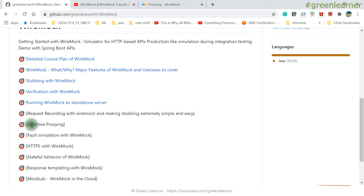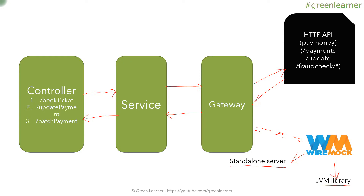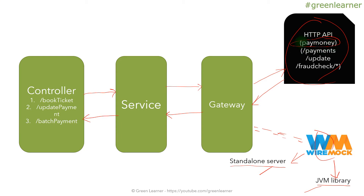Let me show you the use case for Selective Proxy — what are the scenarios where we have to use this Selective Proxy. This is the sample project structure that we are demoing around. You are already aware about the controller, service, gateway, the PayMoney API, and the WireMock server. We have seen JVM and standalone as well. The use case for the current video: this is the PayMoney API, the actual running PayMoney API.